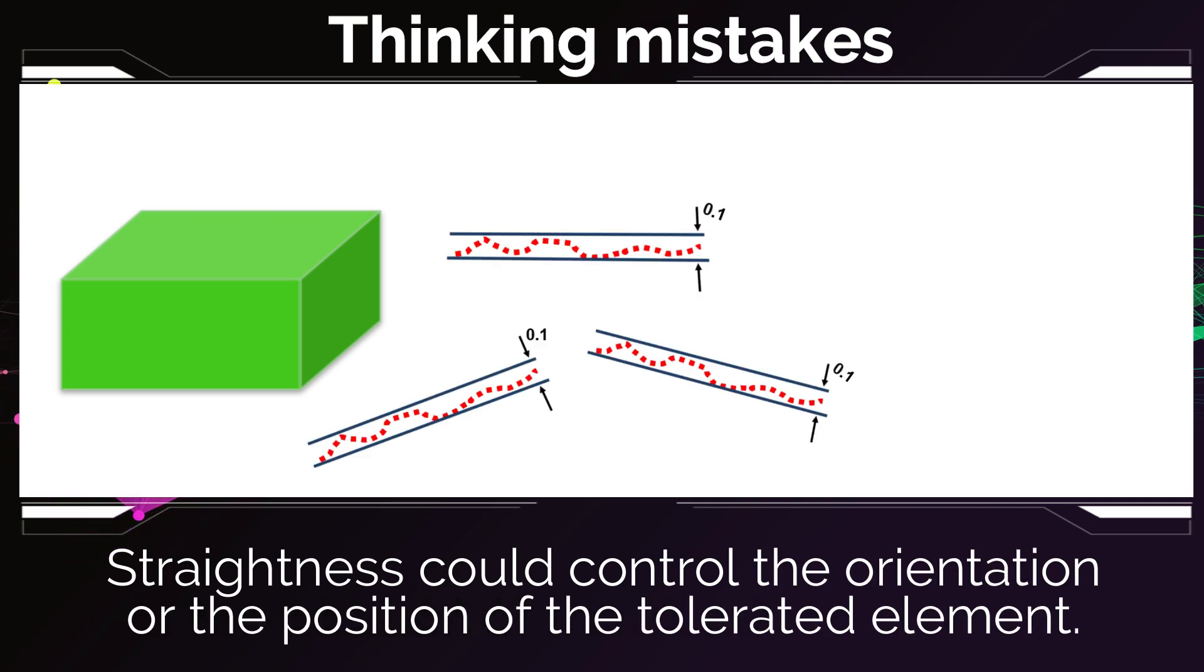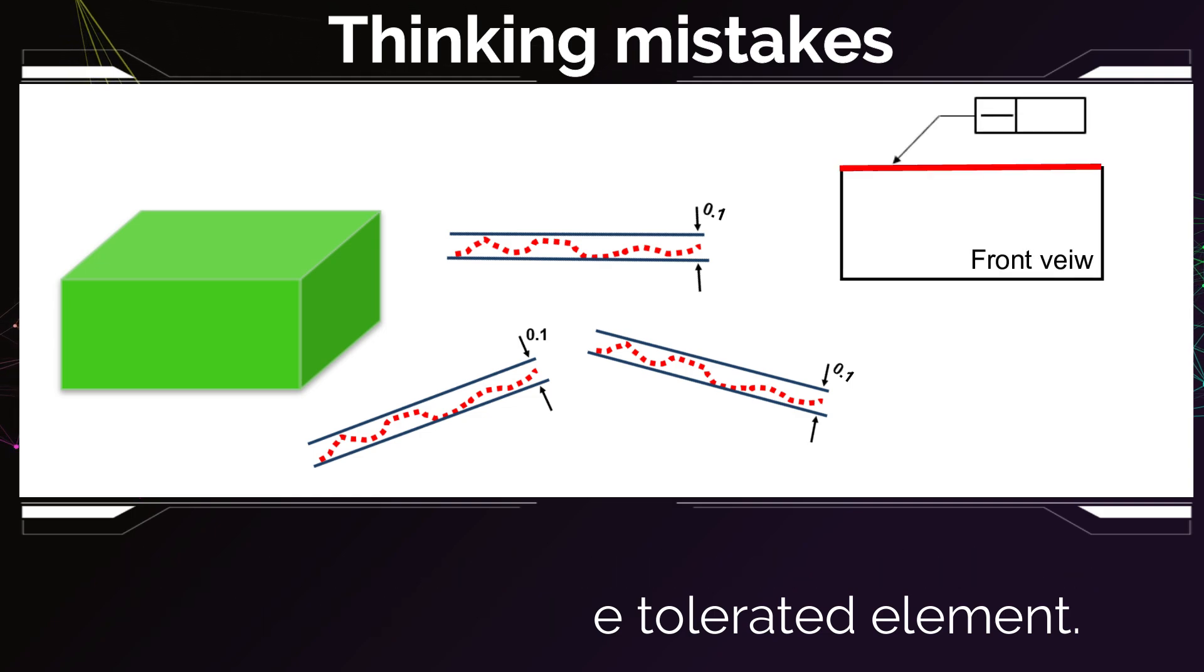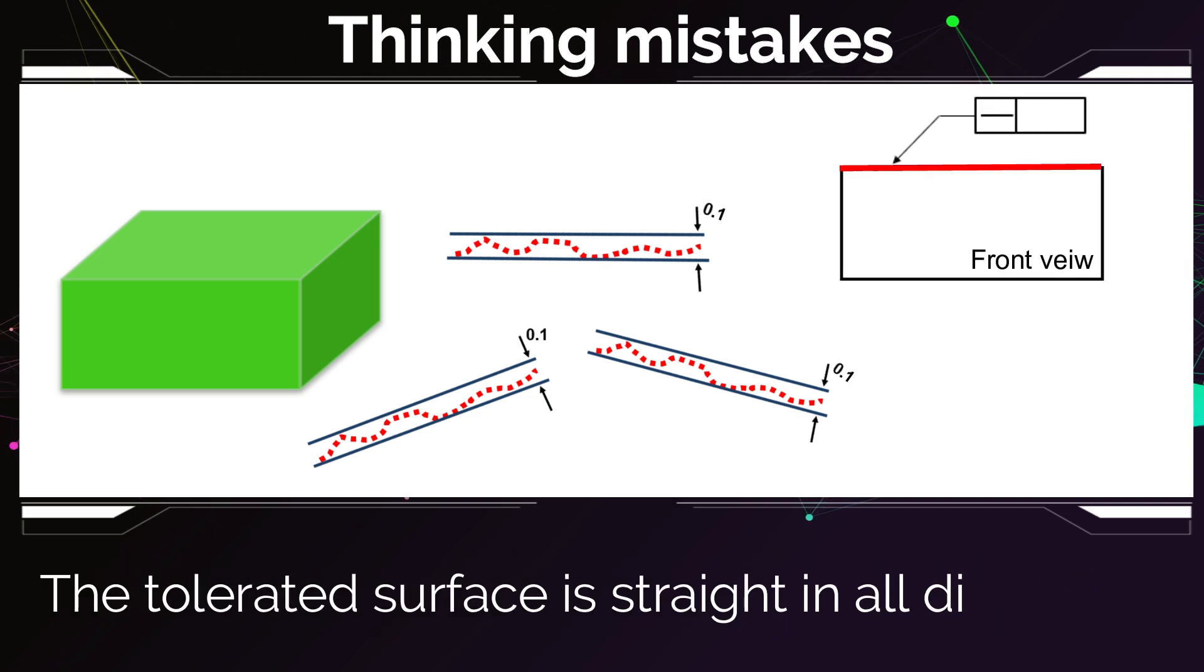The first is that you think that the straightness tolerance could control the orientation or the position of your element. And the second mistake is if you put it on a surface, does this mean that all the lines of the surface should be straight in all directions? No,